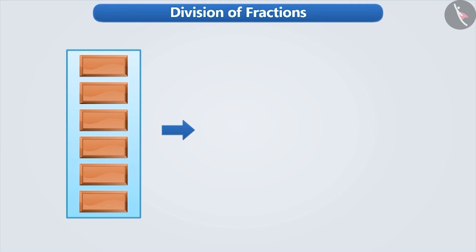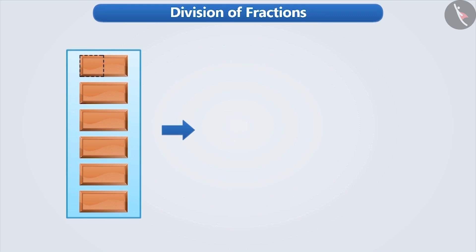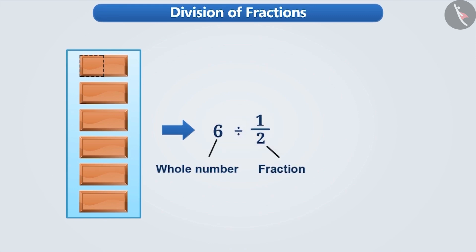Now using the same six chocolates, if you have to make a group of half chocolates, then how many groups will you be able to make? To find this, you must divide six by half.